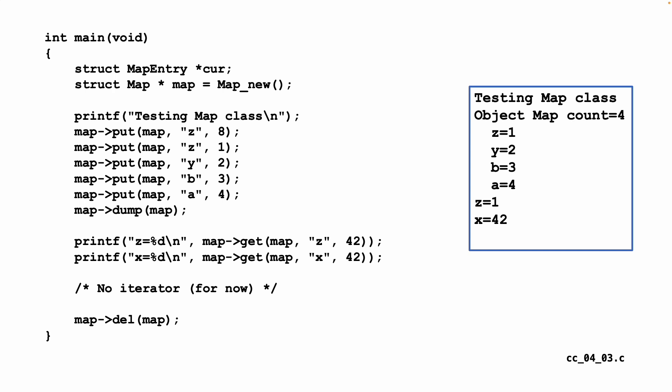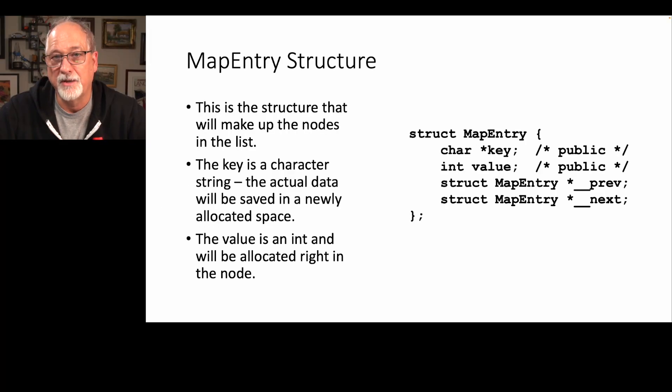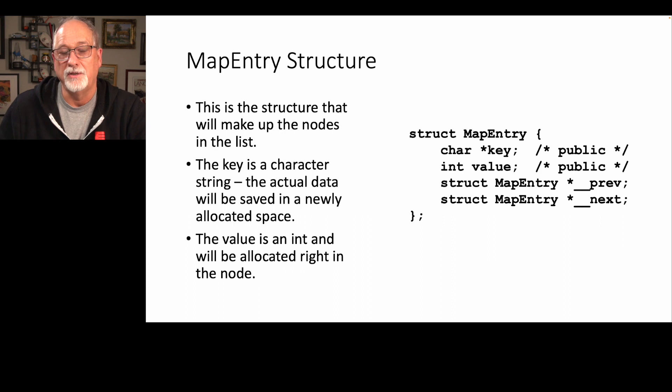We're also going to be more explicit about what things in these classes are public and what things are private. We'll start with the map entry — the structure that makes up the nodes of the linked lists. The key is a character string and the value is an integer. We dynamically allocate the key, and we have a prev and a next. The prev and next have double underscores, meaning they're private. But key and value are public — indicated by not having double underscores in front of them.